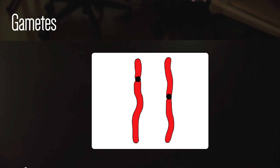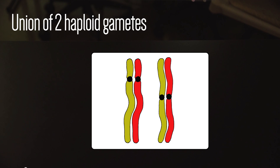Before we begin, remember that meiosis produces gametes, or sex cells. Gametes are haploid, or N, because they have only one of each chromosome pair. The union of two haploid gametes in fertilization produces a unique zygote, or fertilized egg, with the diploid number restored.